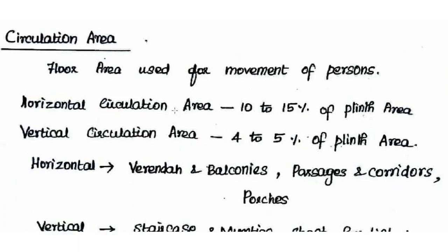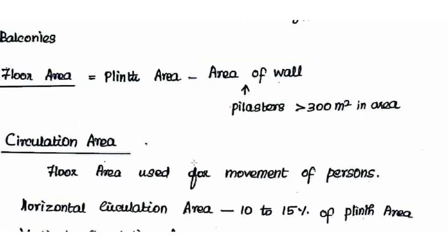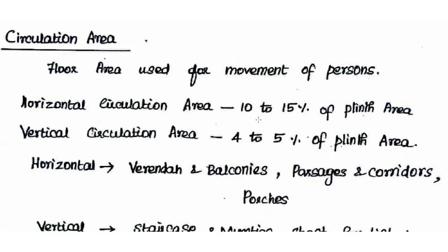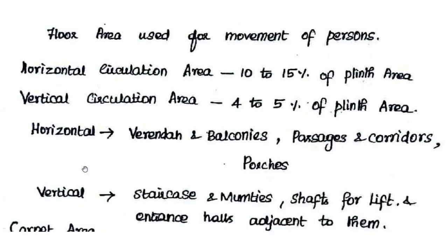When wall thickness is less than 300 mm, wall area is included differently. The next area is circulation area — floor area used for movement of persons. There are horizontal and vertical circulation areas. The horizontal circulation area is 10–15% of plinth area, and vertical circulation area is around 4–5% of plinth area.